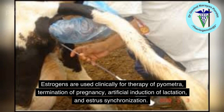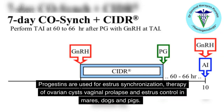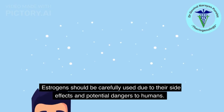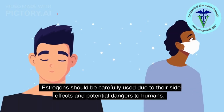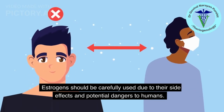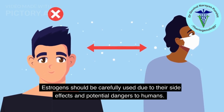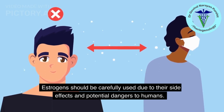Estrogens are used clinically for therapy of pyometra, termination of pregnancy, artificial induction of lactation, and estrus synchronization. Progesterone is used for estrus synchronization, therapy of ovarian cysts, vaginal prolapse, and estrus control in mares, dogs, and pigs. Estrogens should be carefully used due to their side effects and potential dangers to humans.